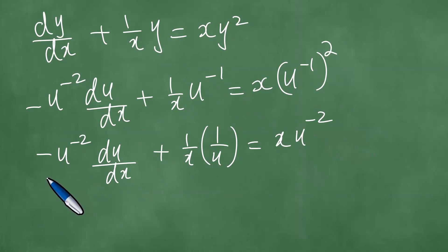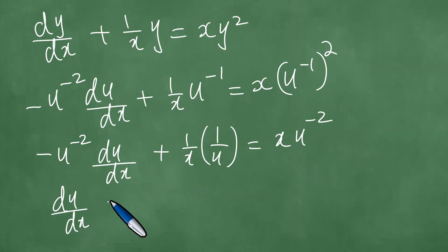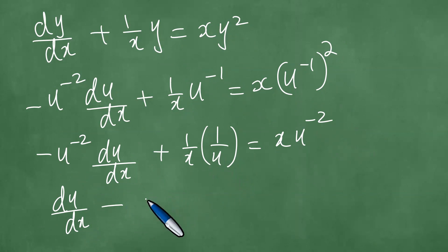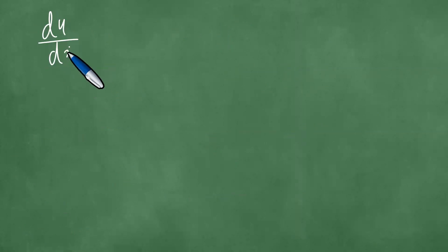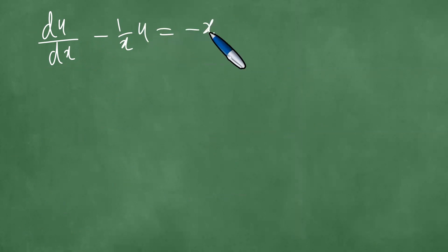We multiply through by minus u squared, both left and right. We get du/dx minus 1 over x times u equals minus x. This is a first-order linear ODE: du/dx minus 1 over x times u equals minus x.